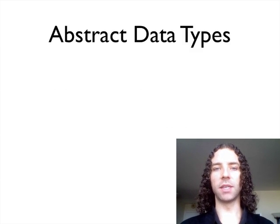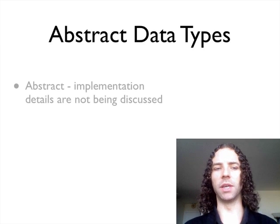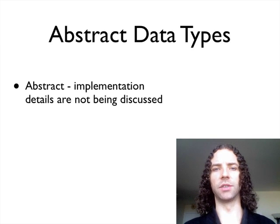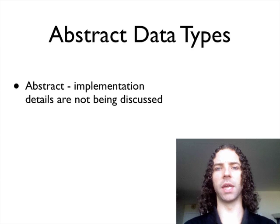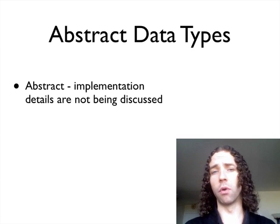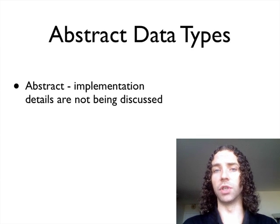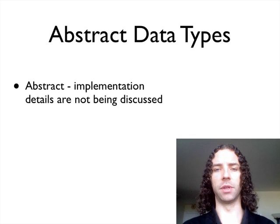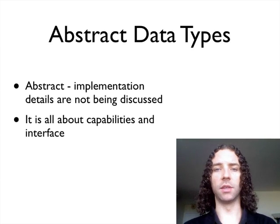Basically, abstract data types — what they come down to is they're abstract, meaning that we're really not interested in the implementation details. You just say, I need a list or I need a container of something. It doesn't matter how that's put together. That might matter from a performance point of view or based on the technologies you have at your disposal, but when you're thinking about the design of the software it really doesn't matter. This means it's all about the capabilities and the interface.